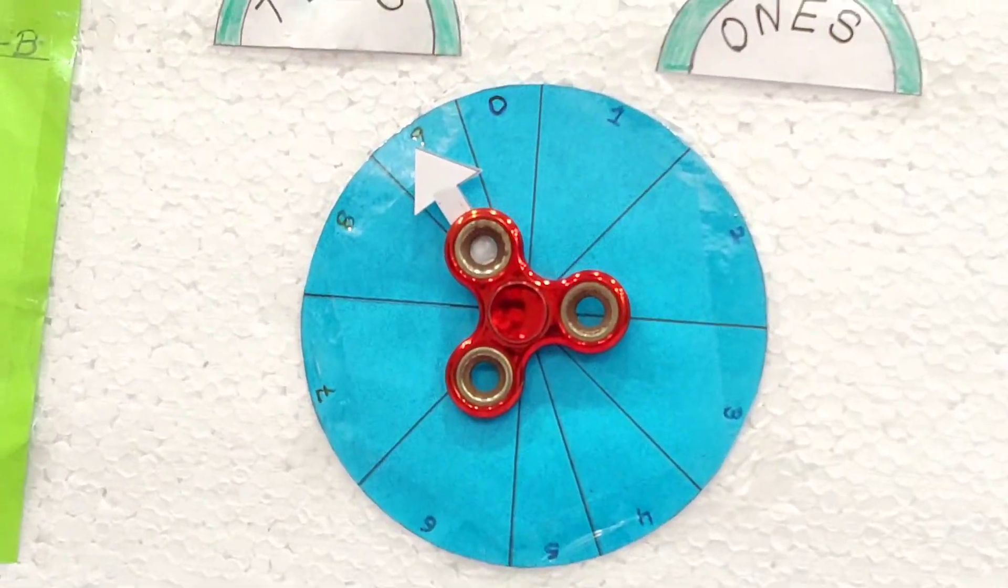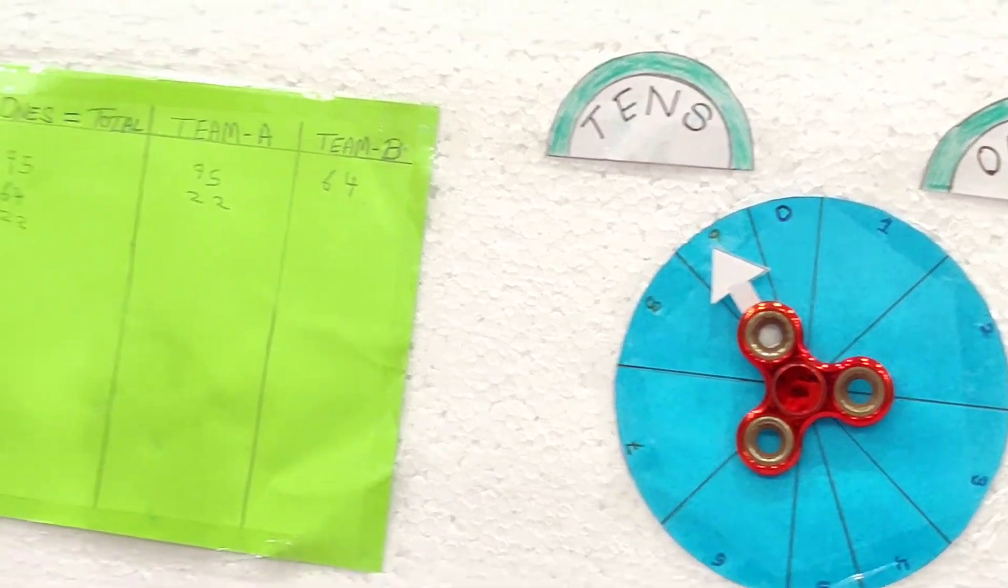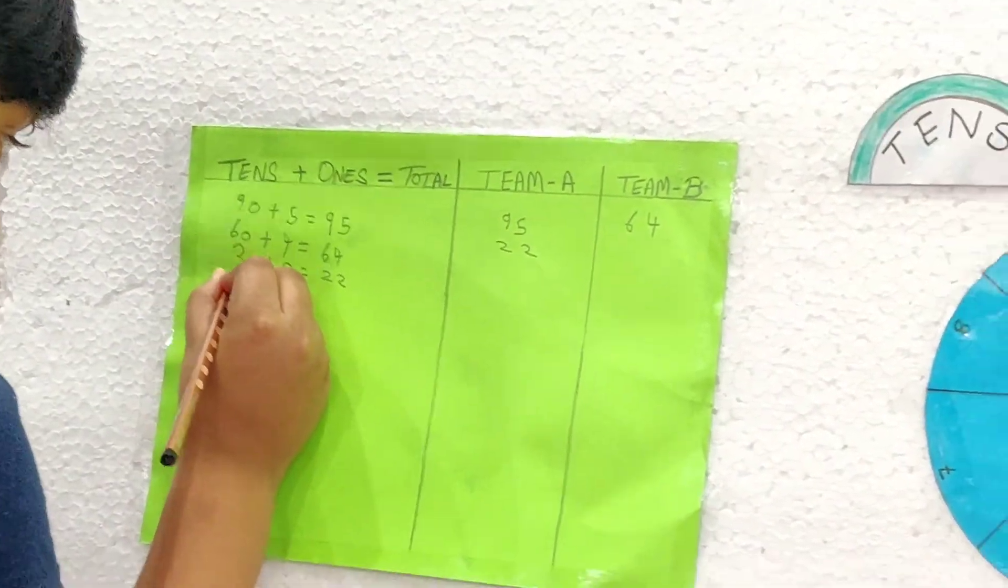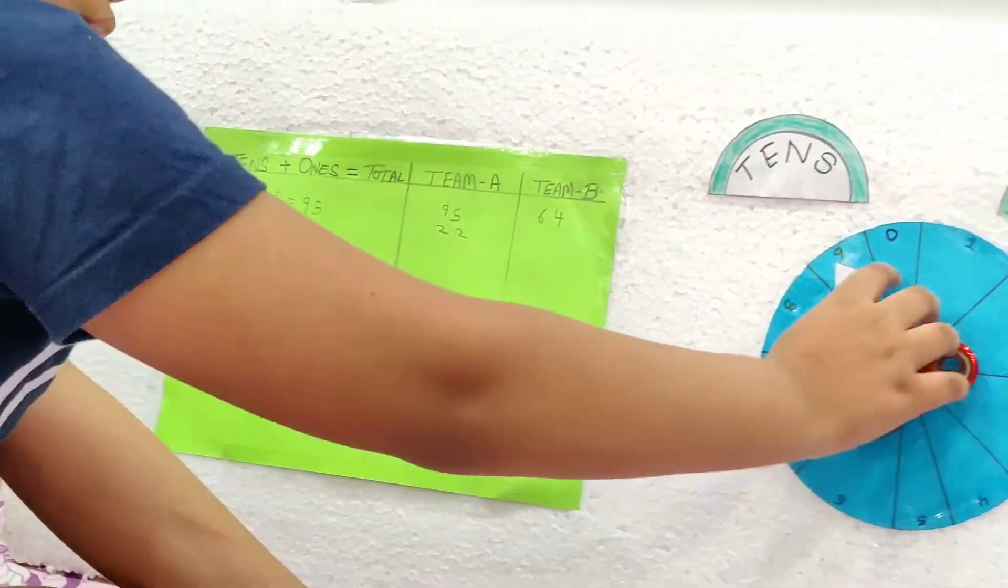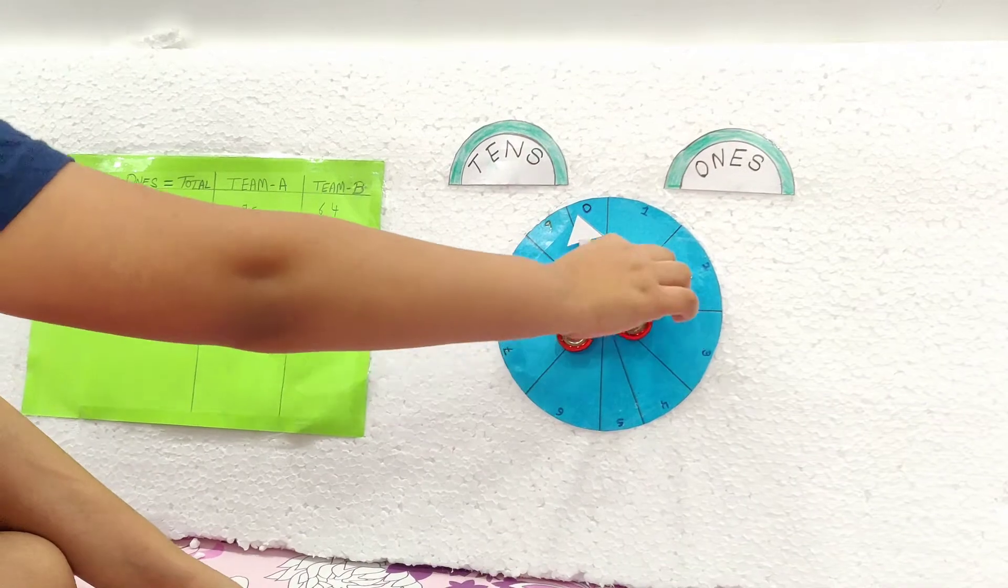This is a lot of number. 90. So it will be 90 and the sign of plus. We will spin the wheel again.